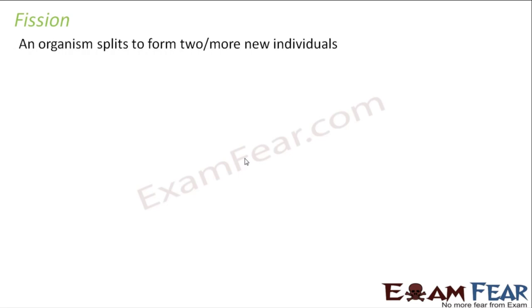Let us start with fission. The word fission means splitting. It is a mode of asexual reproduction where an organism splits to form two or more new individuals. The parent organism will split and form new organisms. This is generally seen in very simple unicellular organisms. Within fission, we have two types: binary fission and multiple fission.